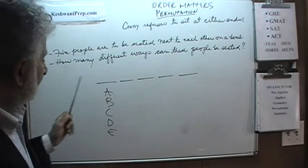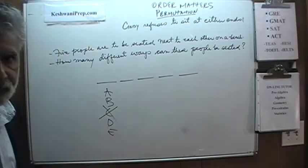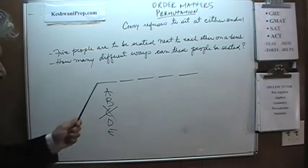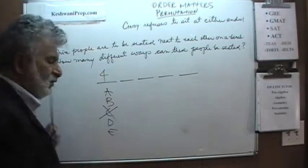And Cindy does not want to sit at the end. That leaves us only four possible choices. Either A, B, D or E can sit here. There are four different ways we can fill this spot.